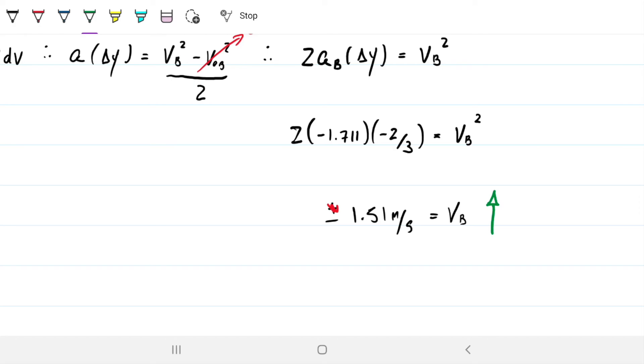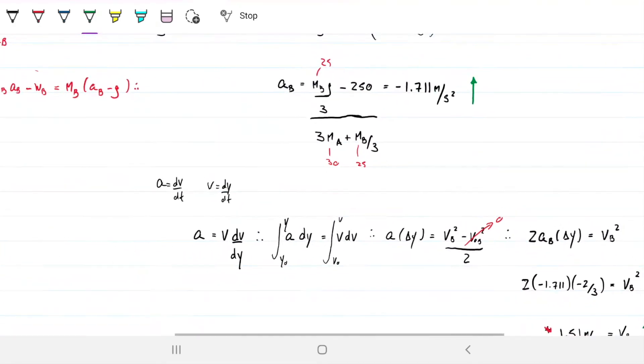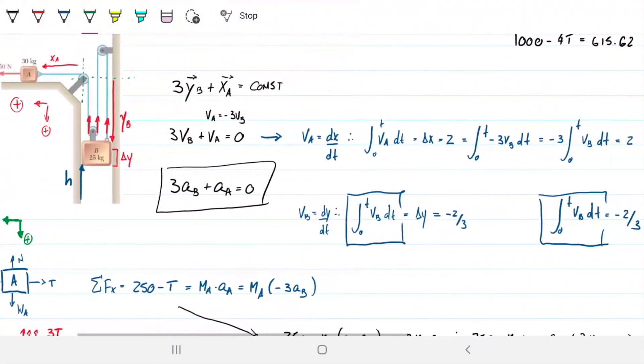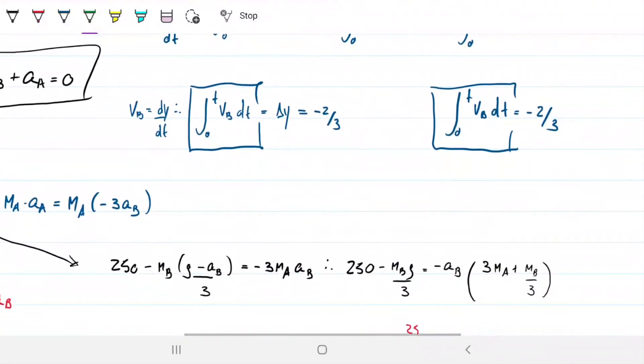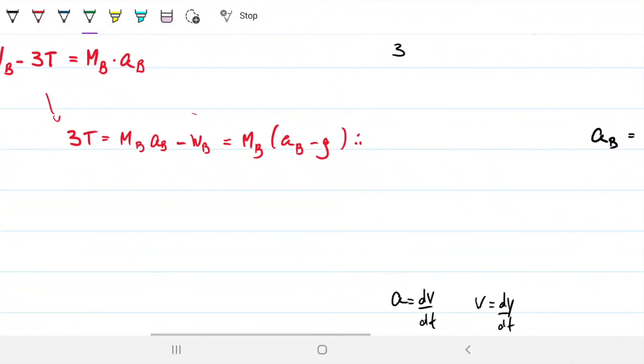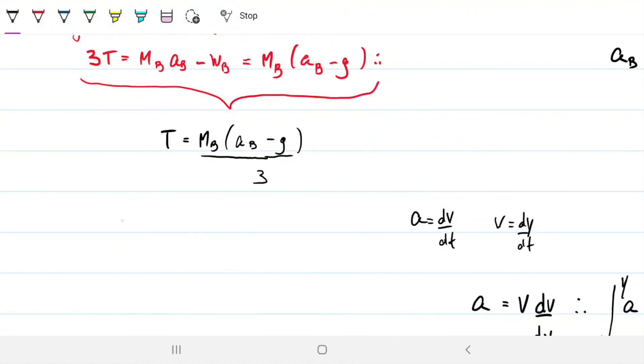The other part, part b is asking for the tension on the cable. So what is T? But now on this approach, finding T is easier than the previous one. Because check out, we actually already kind of did it here. Because then from this relationship here, we get that T is just the mass of b times the difference between acceleration of b and gravity divided by 3. We have everything we need. So that means that tension is just 25 times negative 1.711 minus 9.81. And all of this divided by 3, which gives me the 96 that we got on the previous video as well.